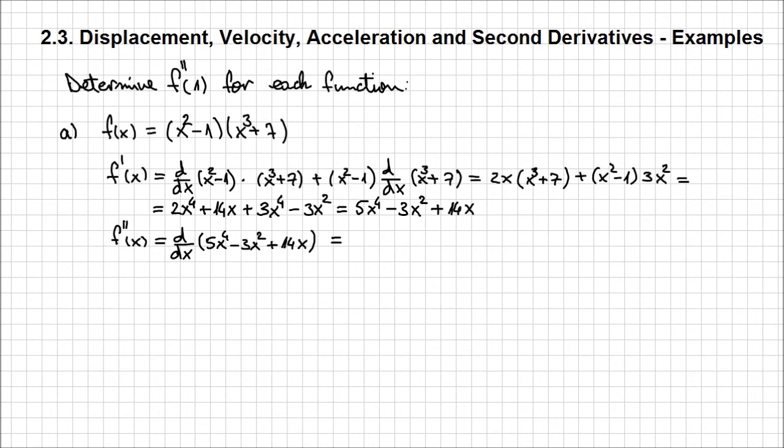So 5 times 4, the power, is 20, times x at power 4 minus 1, so 3, minus 3 times 2, is going to be 6, times x at power 2 minus 1, is 1 plus 14. And this is the expression for the second derivative of f of x.